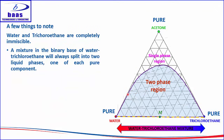Water and trichloroethane are completely immiscible. A mixture on the binary base of water and trichloroethane will always split into two liquid phases — one of essentially pure trichloroethane and one of essentially pure water. This entire base is a two-phase region.